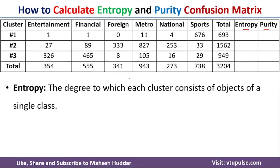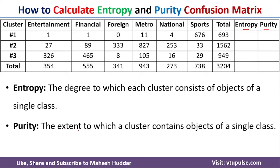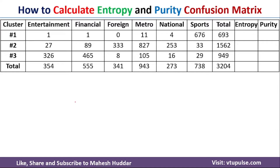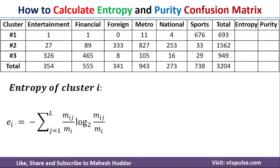Now, what is entropy? Entropy is the degree to which each cluster consists of objects of a single class, and purity is the extent to which a cluster contains objects of a single class. Entropy of a particular cluster I is calculated using this equation: E_I equals minus summation of J from 1 to L, where L is the number of classes — in this case six — of (M_IJ divided by M_I) log base 2 of (M_IJ divided by M_I).